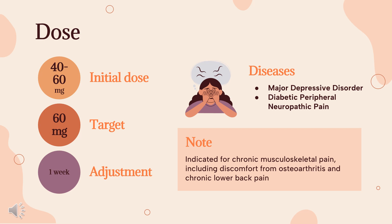Fibromyalgia: 30 mg PO once daily initially for one week to allow for therapy adjustment, before increasing to 60 mg once daily. Target dosage is 60 mg PO once daily, not to exceed 60 mg per day. No additional benefit has been shown with doses greater than 60 mg. Chronic Musculoskeletal Pain (including osteoarthritis and chronic lower back pain): 30 mg PO once daily initially for one week, then increase to 60 mg once daily. Target dosage is 60 mg per day PO, not to exceed 60 mg per day.